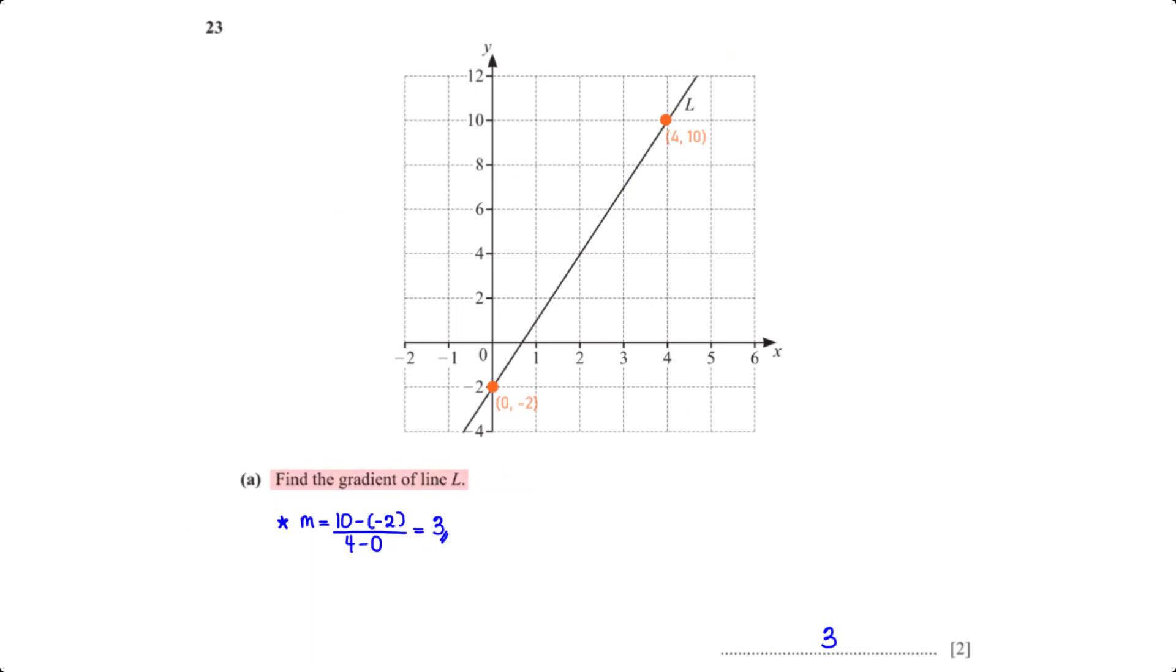Find the gradient of line L. First, we need to pick two points on line L. Then, when we apply the gradient formula, we get 10 minus negative 2 divided by 4 minus 0, which is equal to 3.